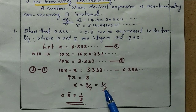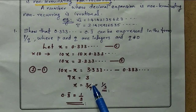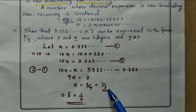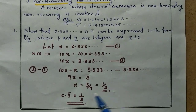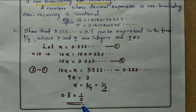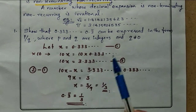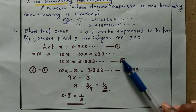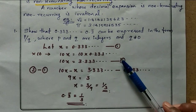Dividing both sides by 3, we get x equal to 1/3. That means 0.3 bar is equal to 1/3. Thanks for watching my video, please wait for the next video. Thank you.